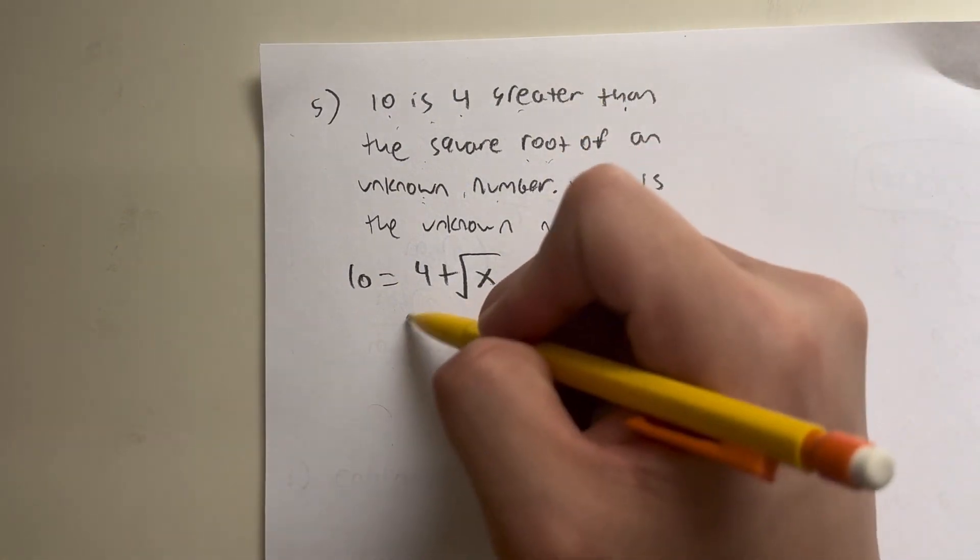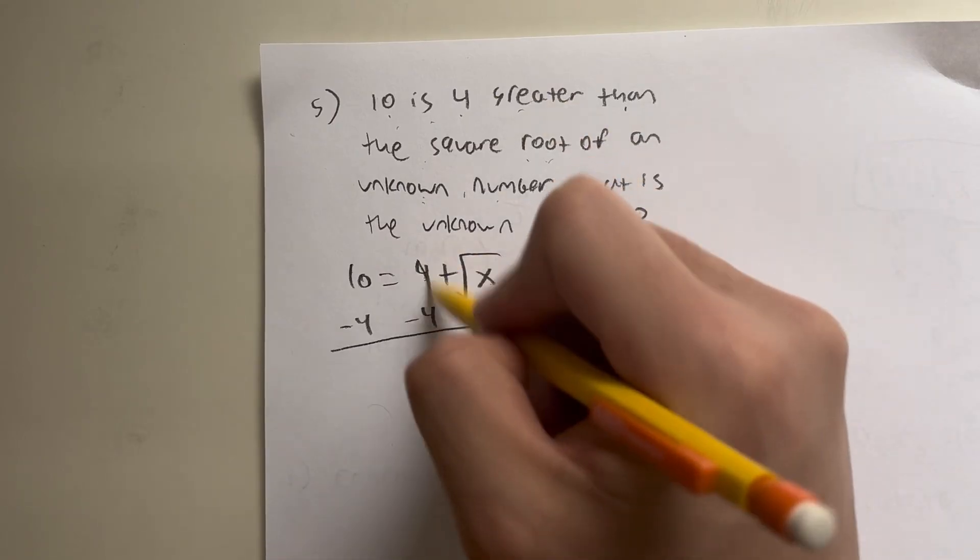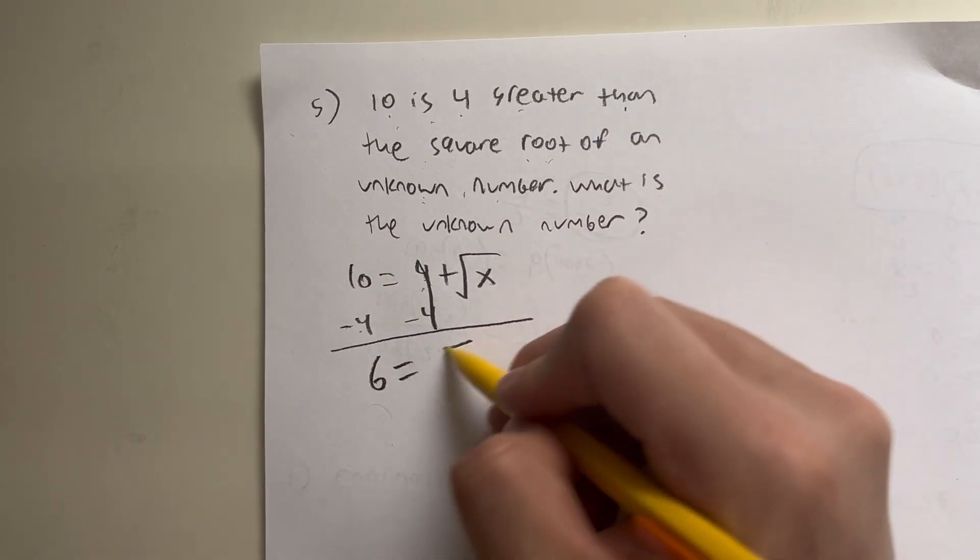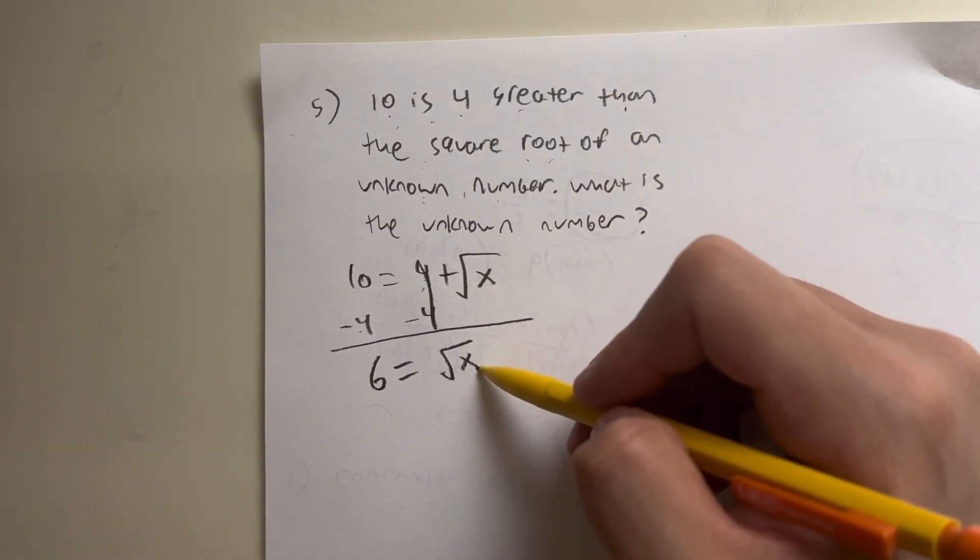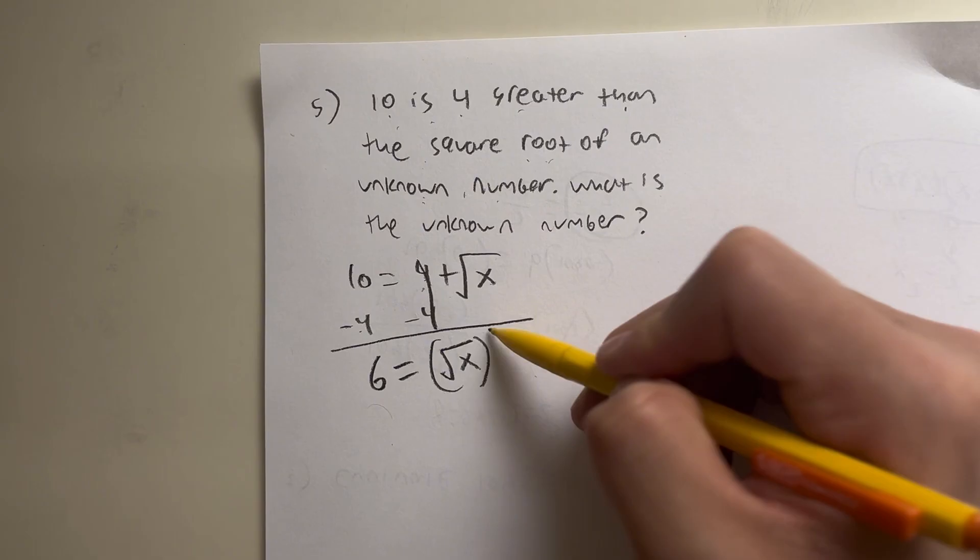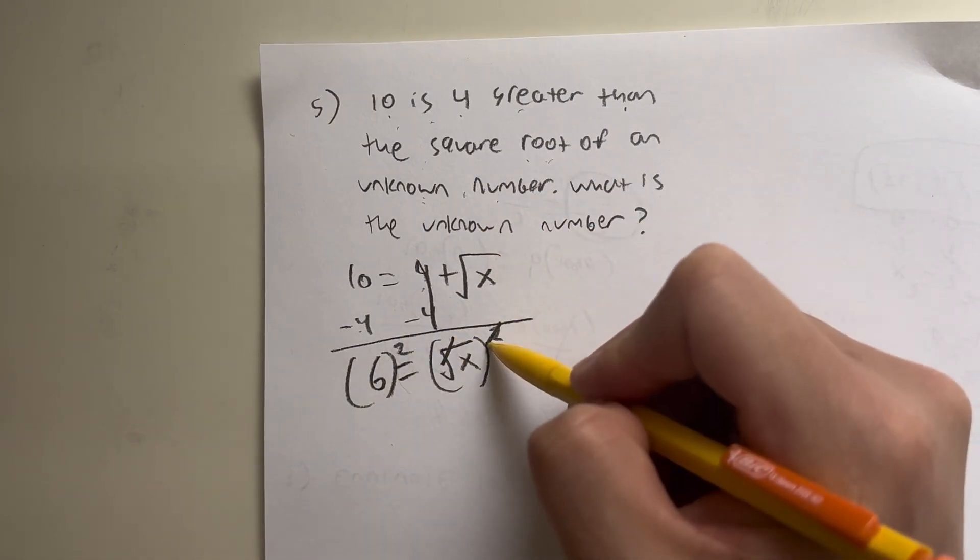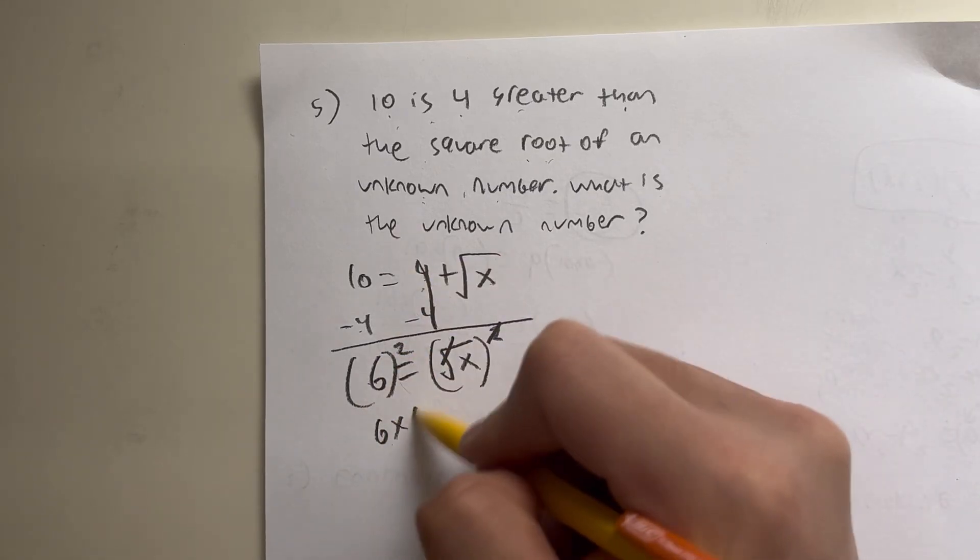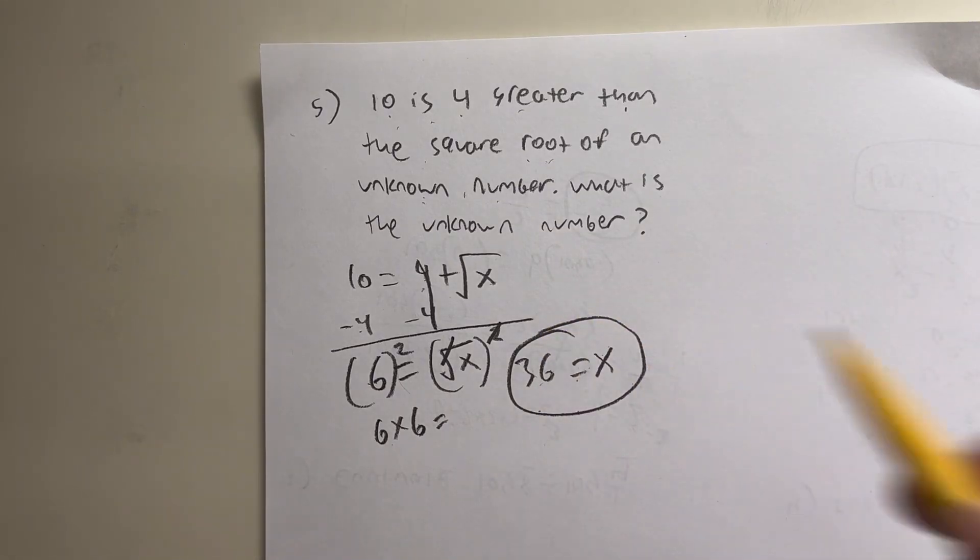And what we have to do to get x by itself is get rid of this 4, which we can do by subtracting 4 on both sides. 4 minus 4 cancel out. 10 minus 4 gives me 6. That's equal to the square root of x. Now, how do I get x by itself? I have to do the opposite of square root or something. It means I square it. I do that on both sides. The idea is that the square root and the square would cancel out. Just giving me x is equal to 6 squared, which is the same as 6 times 6, leaving me with a final answer of 36 as my value of the unknown number.